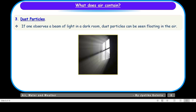Now let us take up dust particles. If one observes a beam of light in a dark room, dust particles can be seen floating in the air. That means the floating dust particles are visible in a room when light falls on them. I am sure children, you must have seen this phenomenon in your room as well.